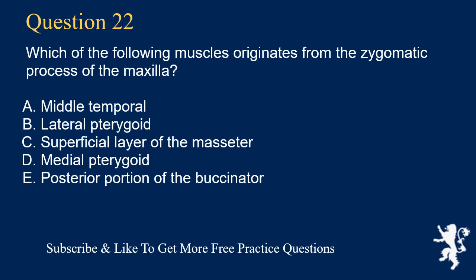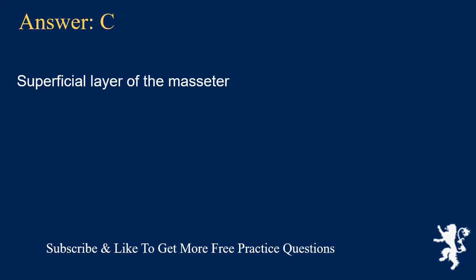Question 22. Which of the following muscles originates from the zygomatic process of the maxilla? A. Middle temporal, B. Lateral pterygoid, C. Superficial layer of the masseter, D. Medial pterygoid, E. Posterior portion of the buccinator. Answer: C. Superficial layer of the masseter.